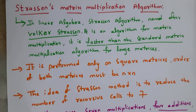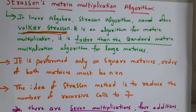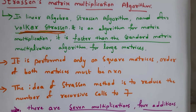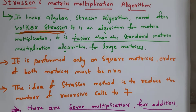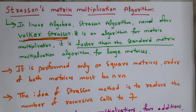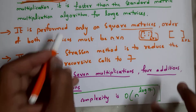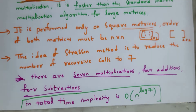Let's get started. In linear algebra, Strassen's algorithm is named after Volker Strassen. The name itself says Strassen's matrix multiplication, so it is an algorithm that is used for matrix multiplication. We use Strassen's matrix multiplication because it is faster than normal matrix multiplication, and it is suitable for multiplying large matrices.